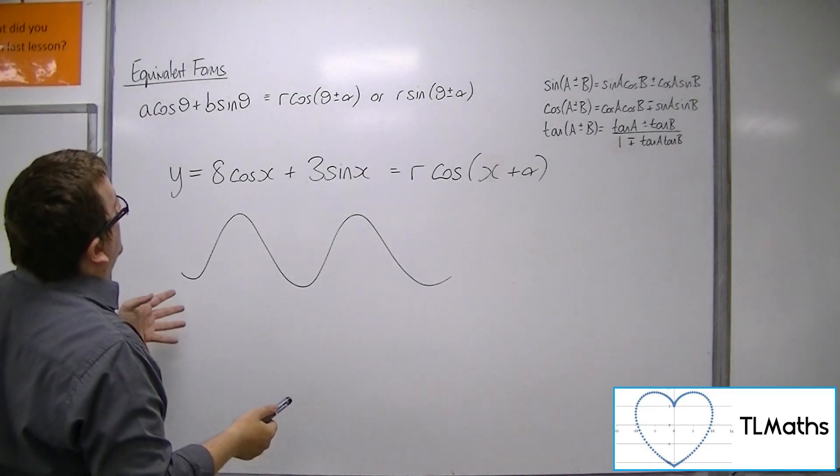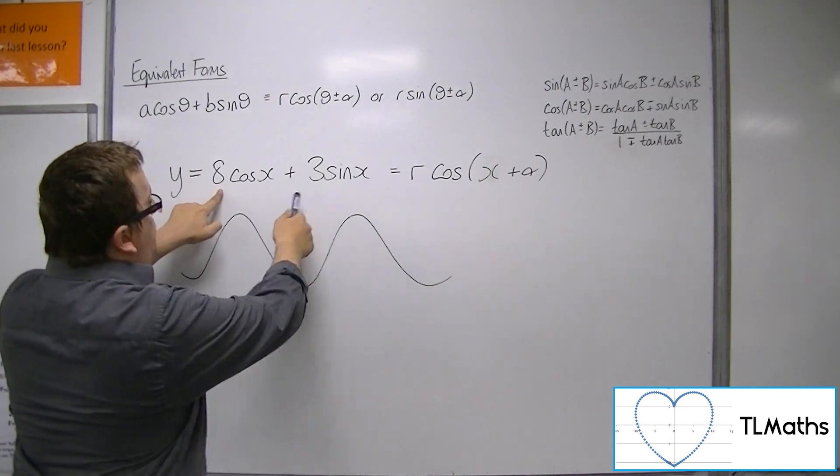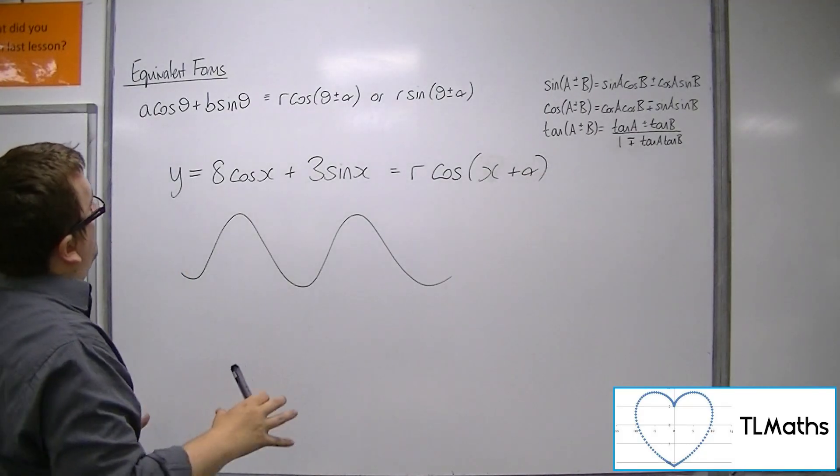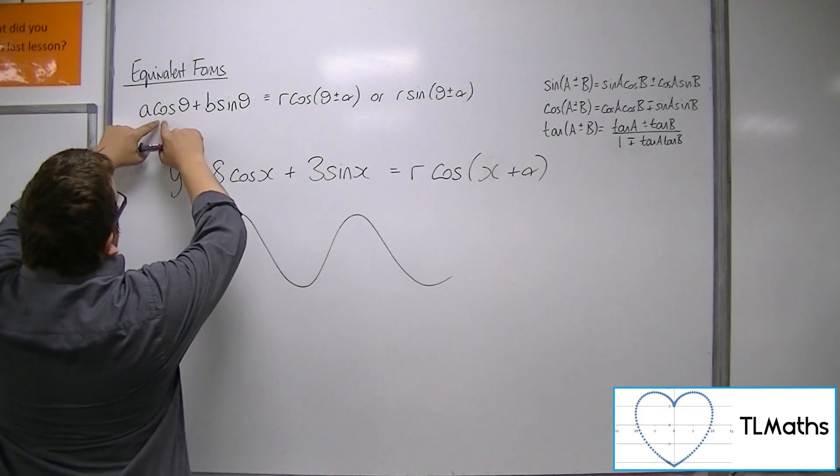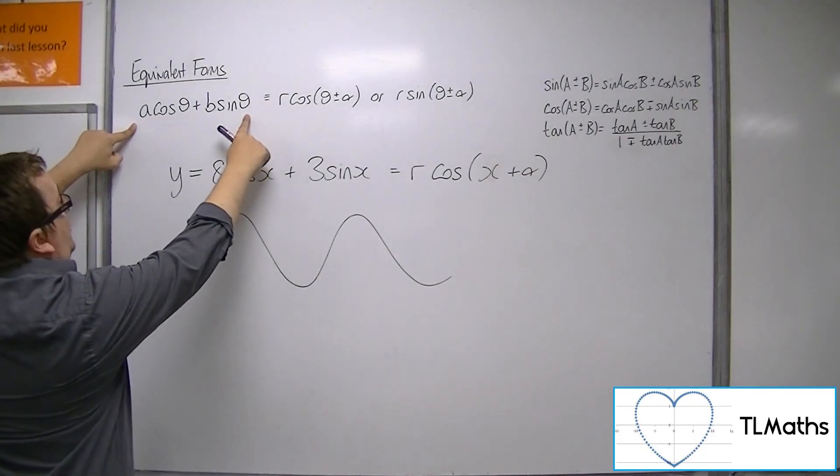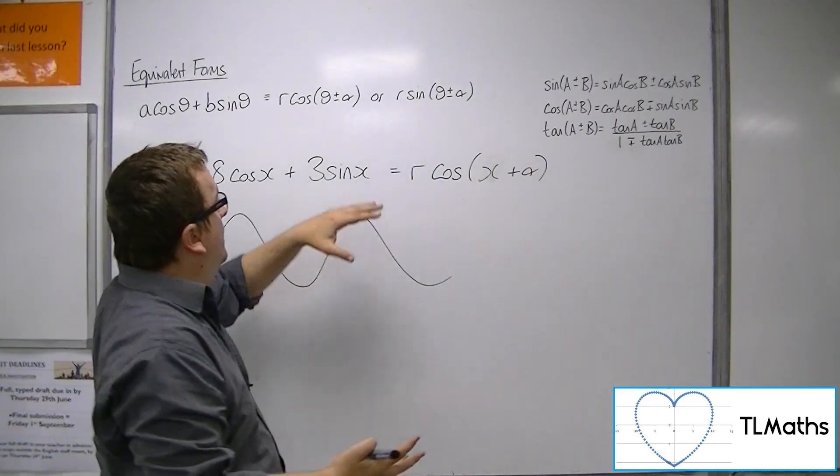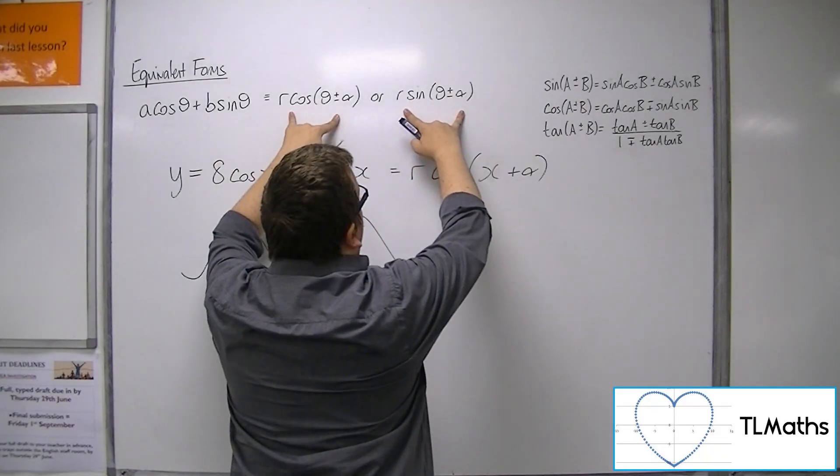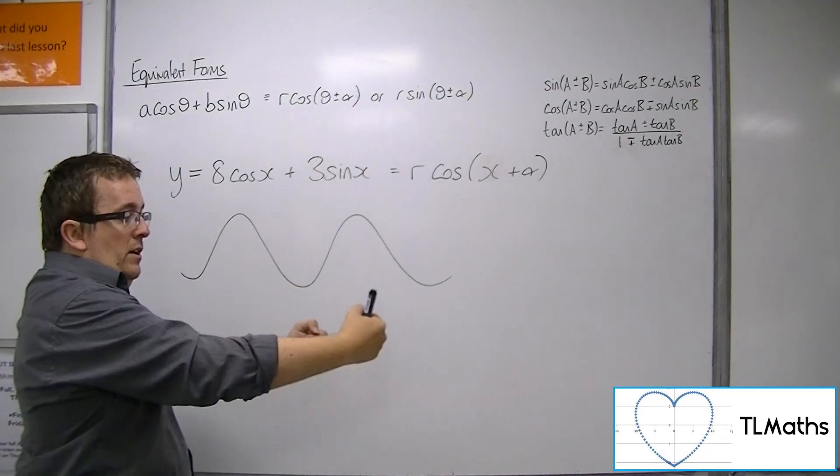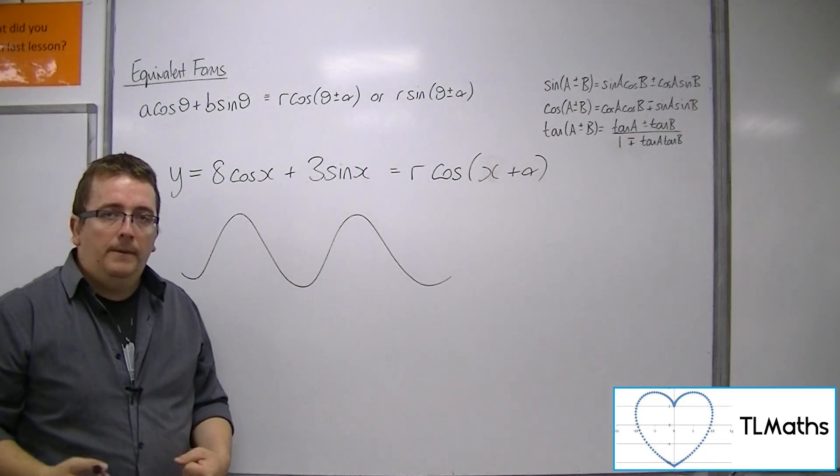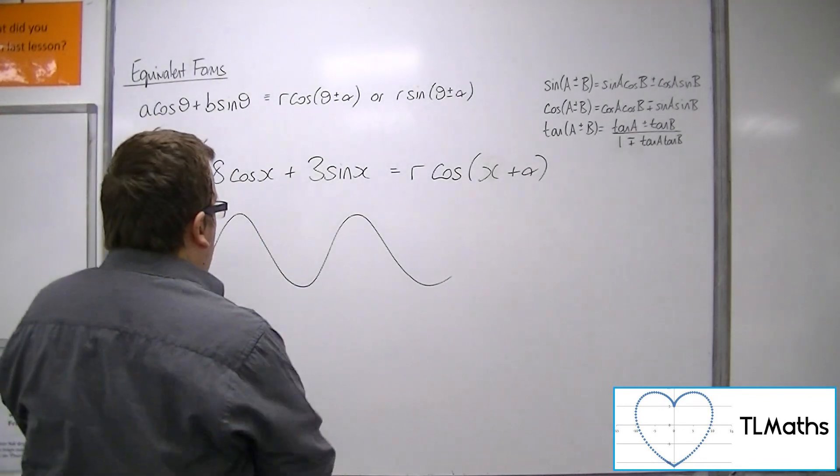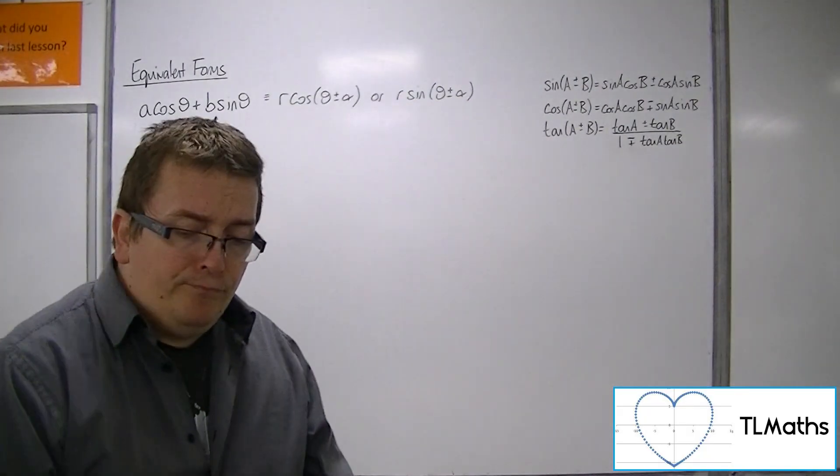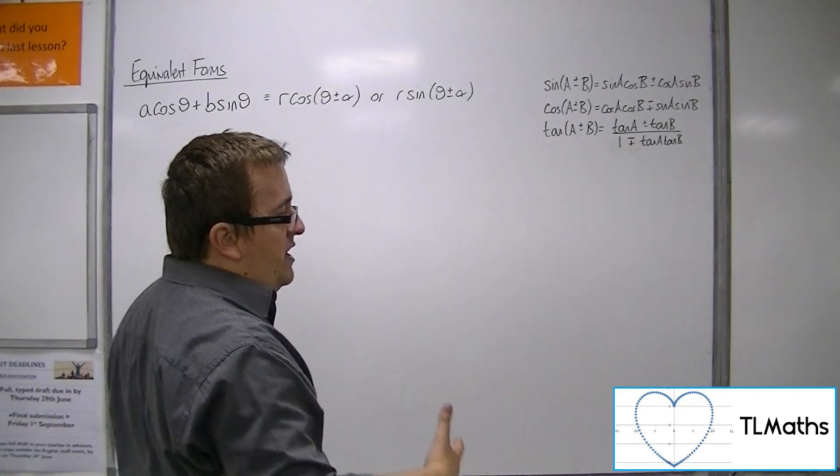And so we should be able to write, now it doesn't matter what numbers you put there, it could be a million and a minus 800 if you wanted to, it doesn't matter. The fact of the matter is that if we've got this form of a cos theta plus b sine theta, we should be able to write it in either the form r cos theta plus or minus alpha or r sine theta plus or minus alpha, where the plus minus alpha is taking account, it could be a translation to the left or to the right. So this is true, and this will allow us to solve some particular types of trigonometric equation.